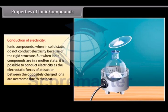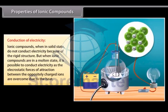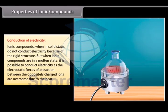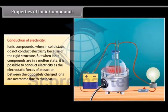Conduction of Electricity. Ionic compounds, when in solid state, do not conduct electricity as the movement of ions is not possible because of the rigid structure. But when Ionic compounds are in a molten state, it is possible to conduct electricity as the electrostatic forces of attraction between the oppositely charged ions are overcome due to the heat. This leads to ions to move freely and conduct electricity.